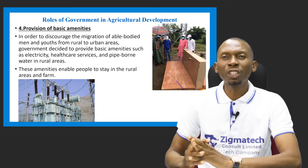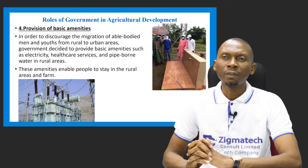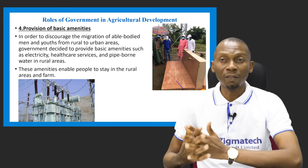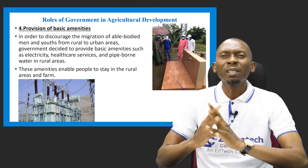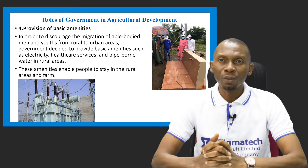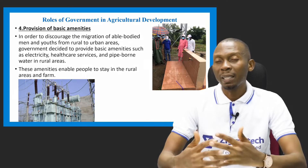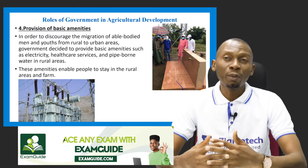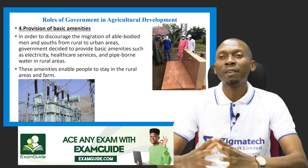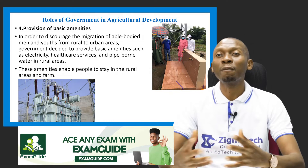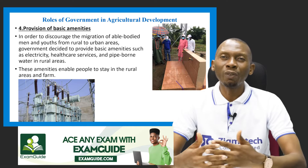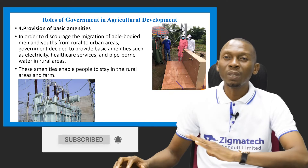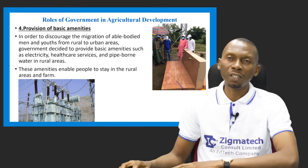Then we have the provision of basic amenities. These include things like electricity, healthcare centers or healthcare services, and pipe-borne water. These have been provided by the government in rural areas where farming takes place. In order to prevent able-bodied men and youth from migrating from rural areas to urban areas in search of jobs, the government has helped to provide basic amenities to encourage the youths to remain in the rural areas and get engaged in farming.